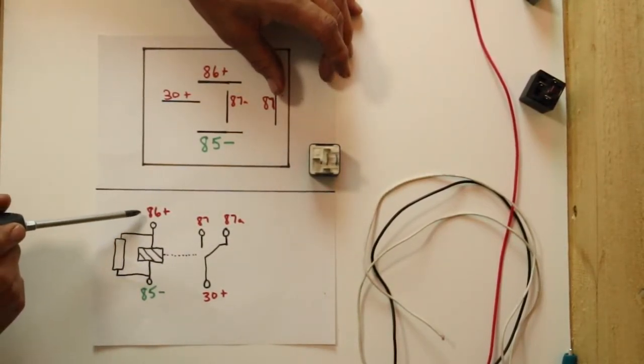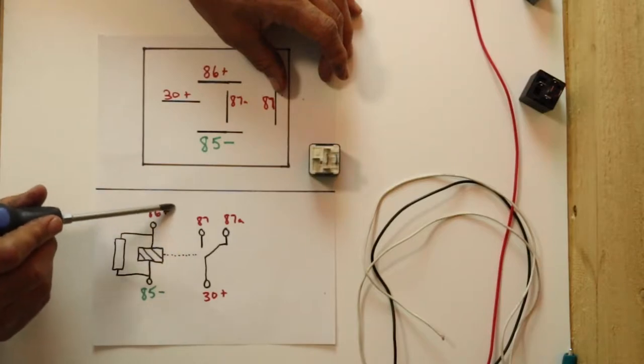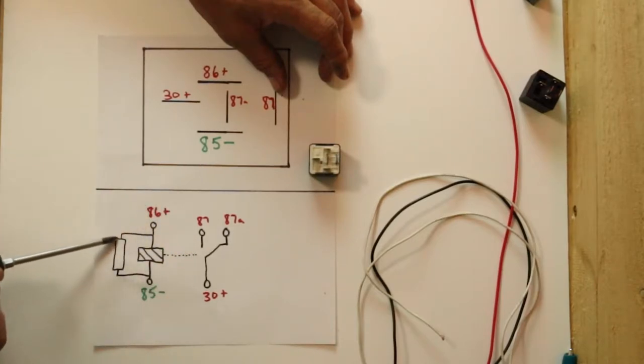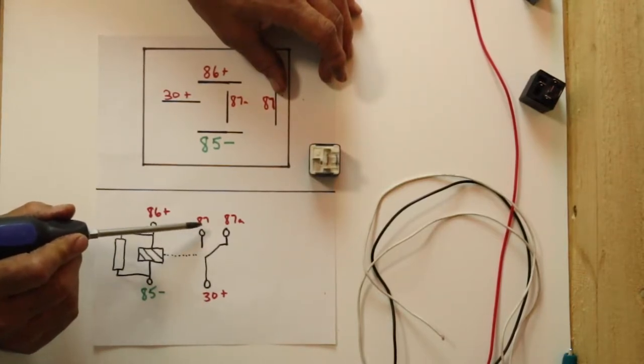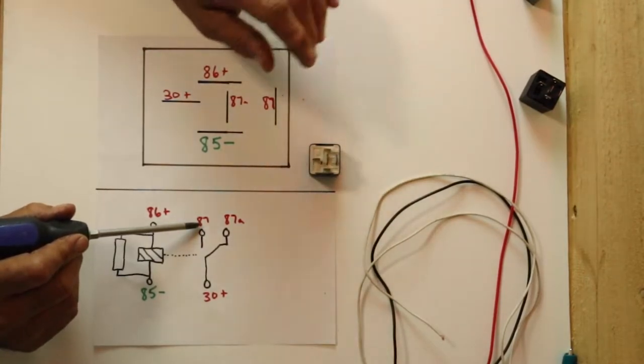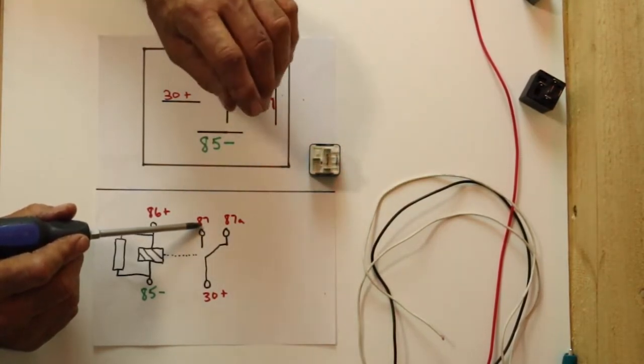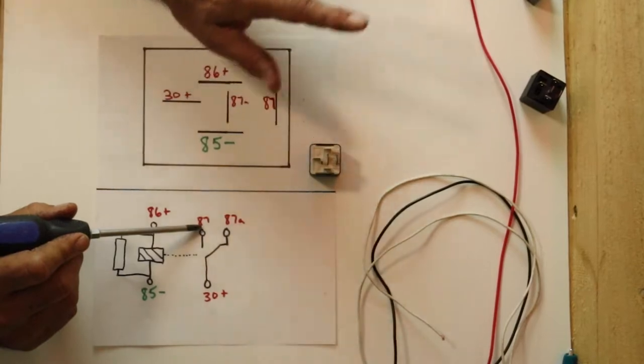If you take a look right here, you can see 85 and 86. That is going to be your control circuit. When it's activated, it throws current from 30 to 87, which powers whatever you're trying to feed. An AC compressor, a cooling fan, a fuel pump, anything like that.